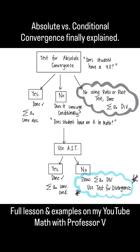You can say the sum of A-N converges absolutely. If it's a no, then you have to check, does the series converge conditionally? Meaning, does the student have an A in math? That's the second question you'd have to get answered.